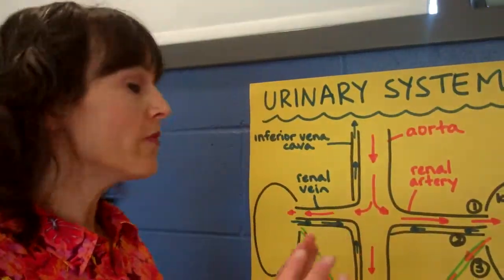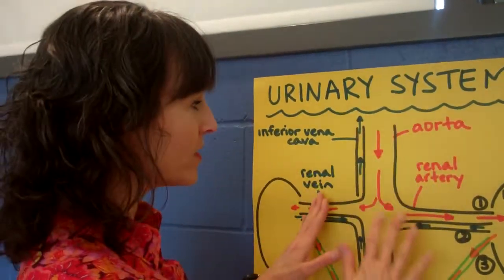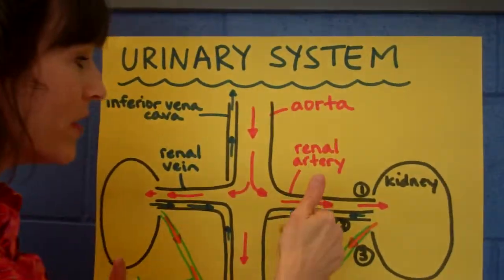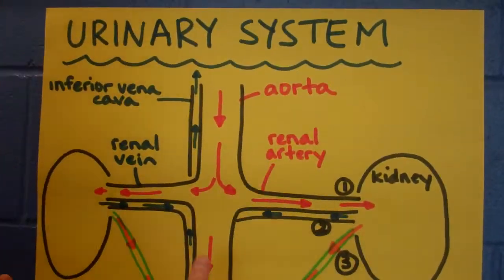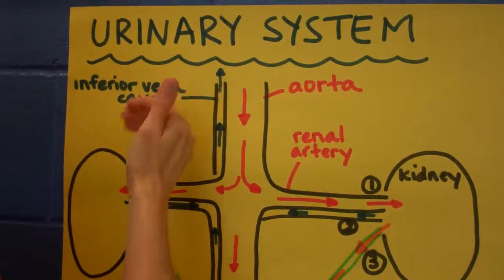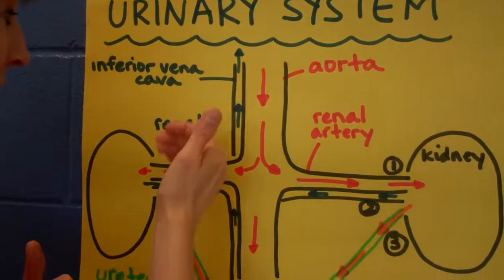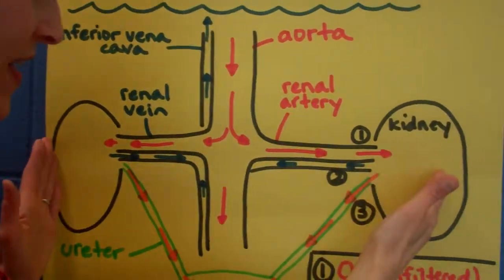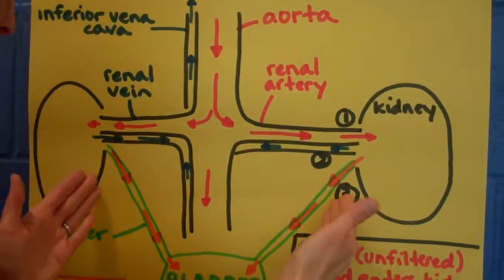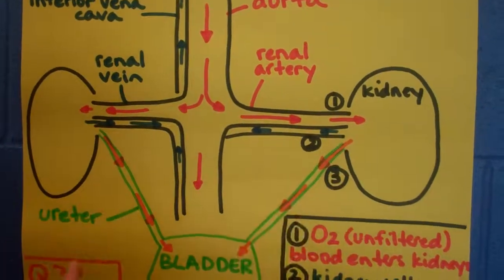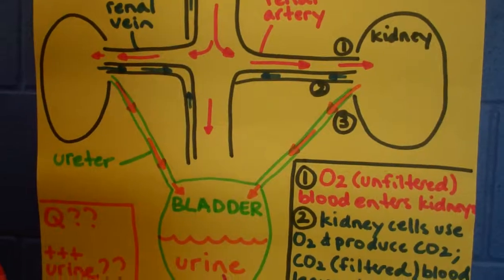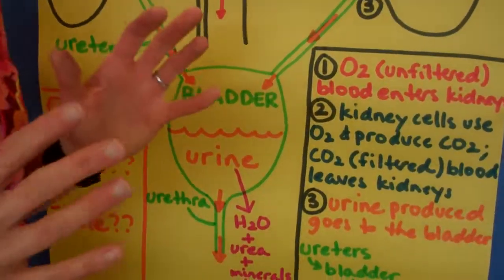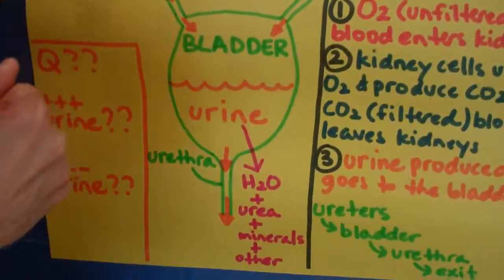Let me show you some of the parts here of the urinary system. You have the aorta, the renal artery, the inferior vena cava, the renal vein, you have the kidneys, you have the ureters, the bladder, and the urethra. So let's go through the path of where fluids go.